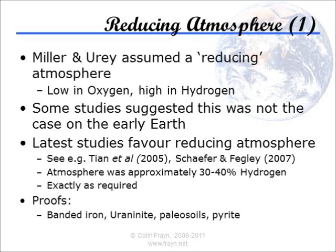Second, to back up this evidence, there is also the case of uraninite — a mineral that cannot form in an oxygen-rich atmosphere. Again, there's lots of it prior to 2.5 billion years ago and very little since. There are some deposits younger than this, which has been pointed out by creationists, but they tend to be found in rapid deposition environments where the rock formed very quickly, and hence the minerals didn't have a chance to get exposed to the atmosphere for very long. Plenty of the older deposits are from very slowly formed rocks, so the presence of minerals that could not form in the presence of substantial oxygen is a damning indictment of the non-reducing atmosphere theory.